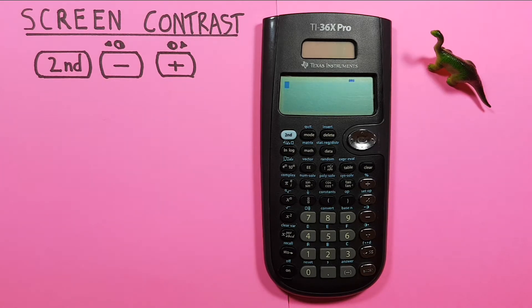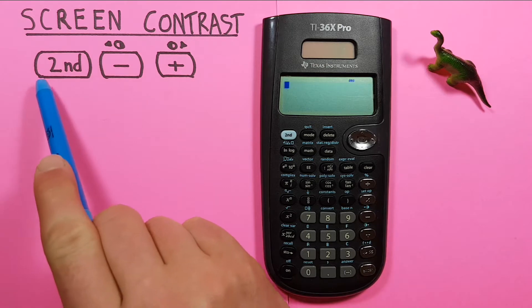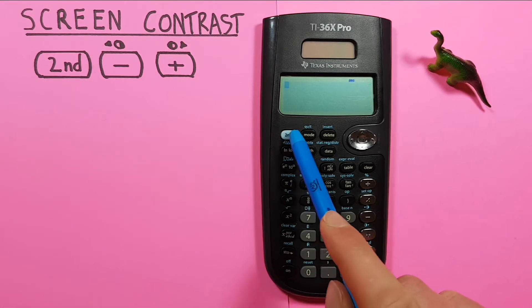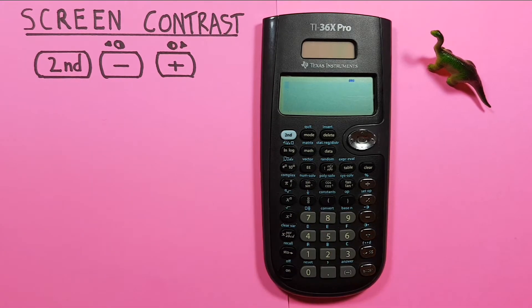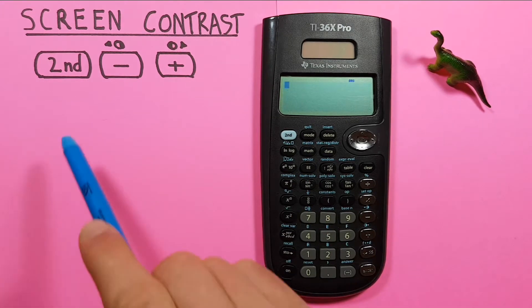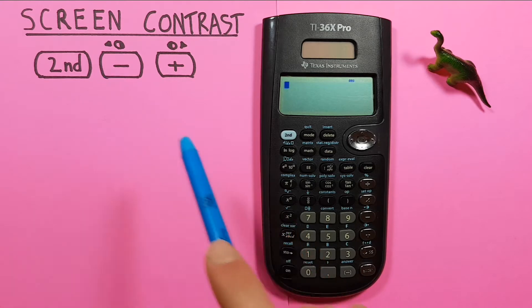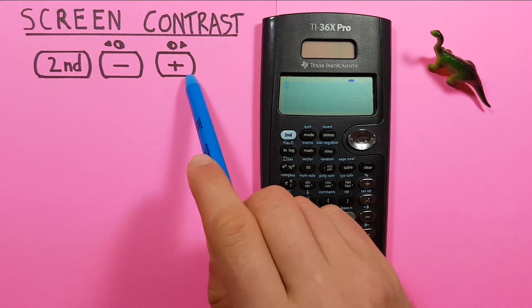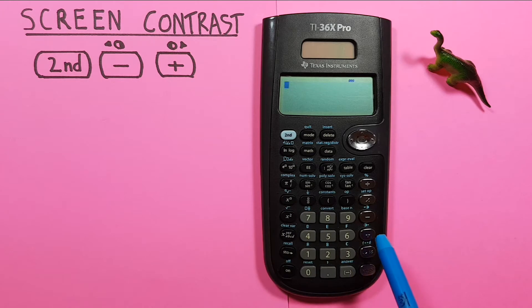To do this we'll use the second function key, located here, the subtraction key, located here, and the addition key, located here.